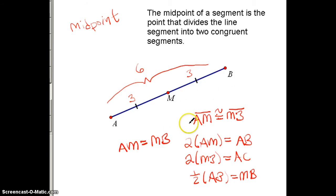Now, that looks a lot like this congruent statement here, but remember this is saying that segment AM has the same size and shape as segment MB, and this is saying that the length of segment AM is equivalent to the length of MB.